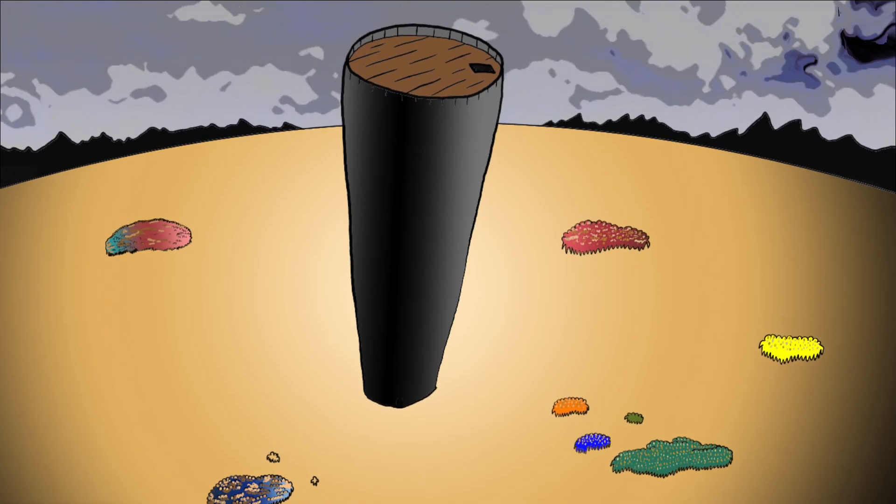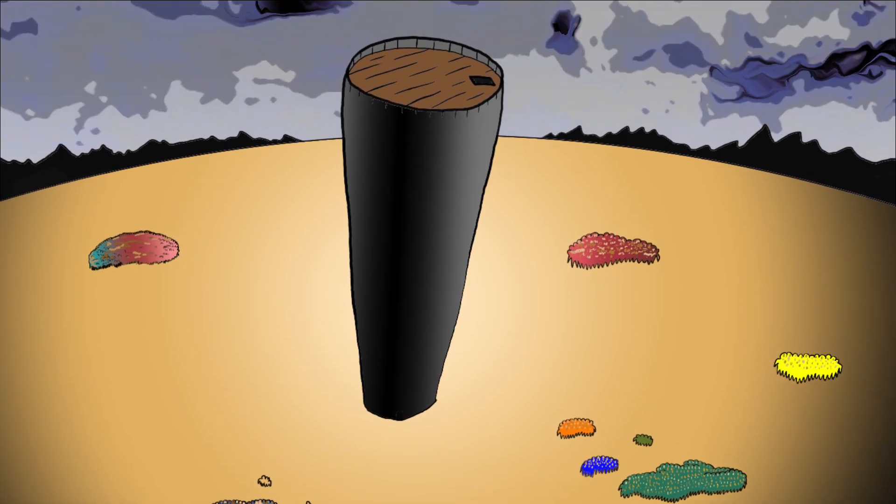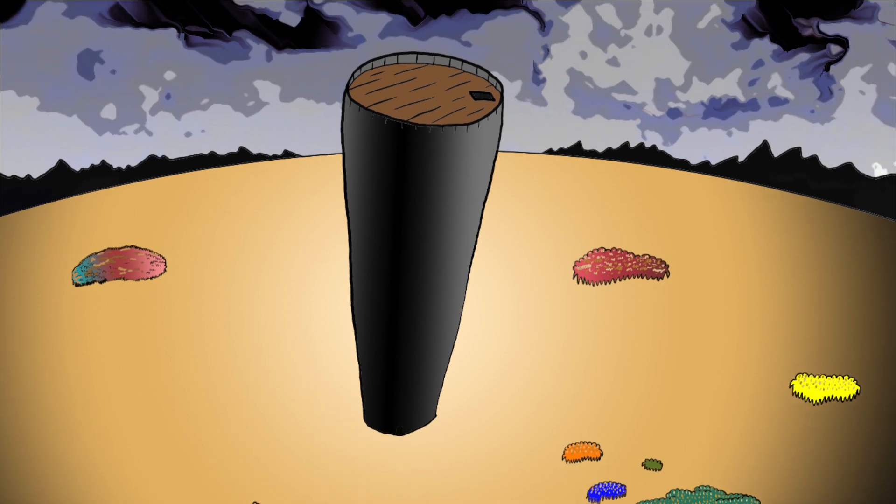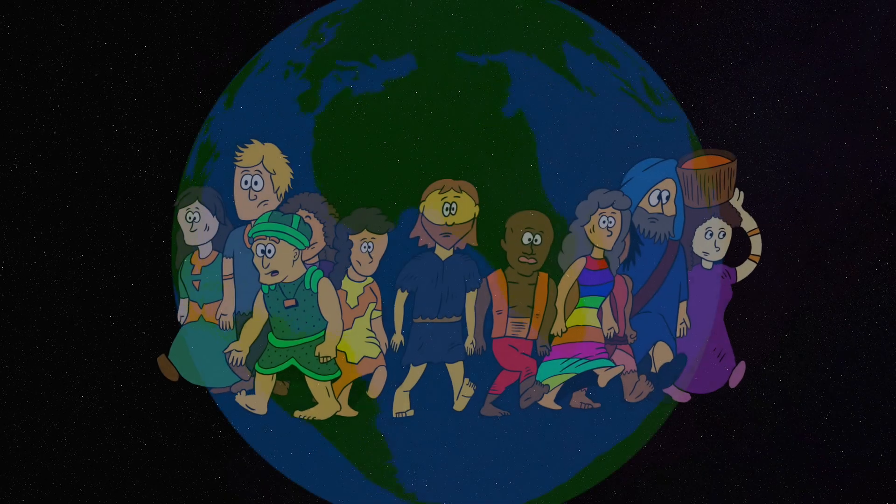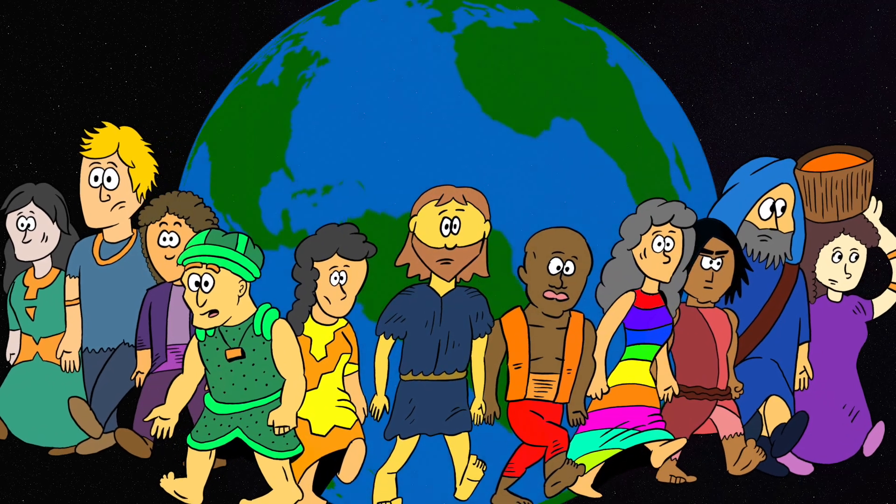The tower was called the Tower of Babel because this is where God confused their language. After that, the people scattered all over the earth.